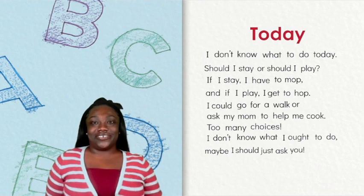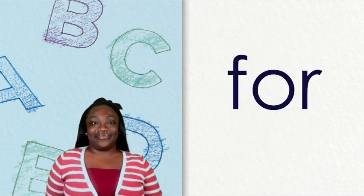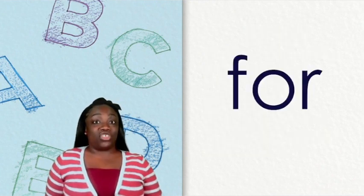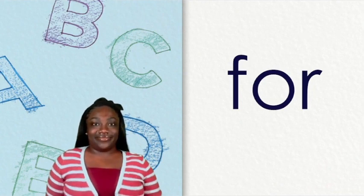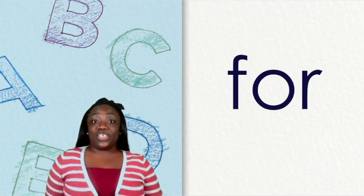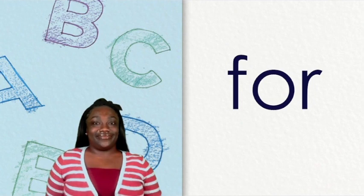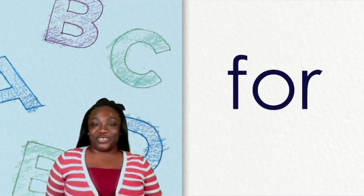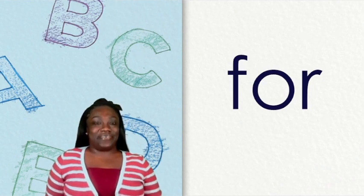Let's check our clues. Does FOR have three letters? Yes. Does FOR rhyme with OR? Yes. FOR is our second mystery word. Keep it up — we've solved our mystery!